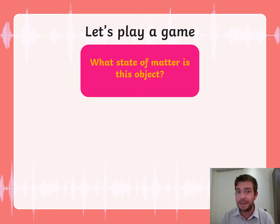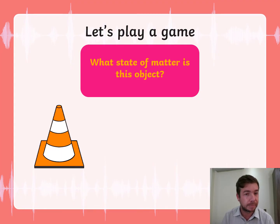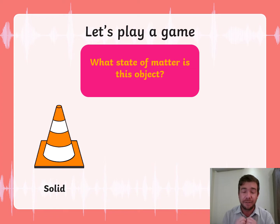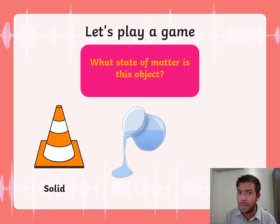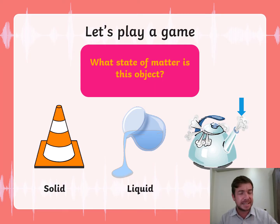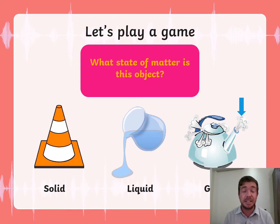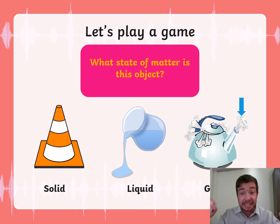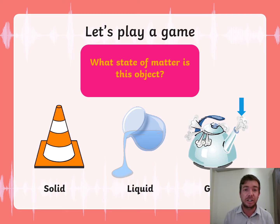Let's play a game — what state of matter is this object? Did you say a solid? Yes, you're correct! It is a solid. The particles of this object are stacked against one another very closely. How about those? Did you say liquid? Yes, you are correct — it is a liquid. Remember, liquid particles are a little bit further away from each other. And what about this one? Did you say gas? Yes, you are correct — it is gas, and these particles are far away from each other. Solid particles are stacked against each other, liquid a little bit further away, and gas is quite far apart — that is why gas can fill any container, liquid can take any shape of a container, and solid doesn't change shape.